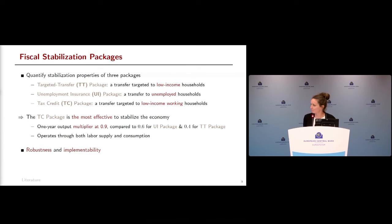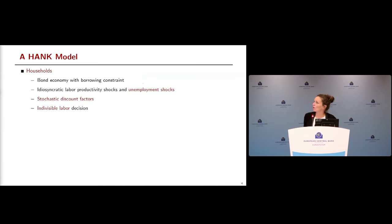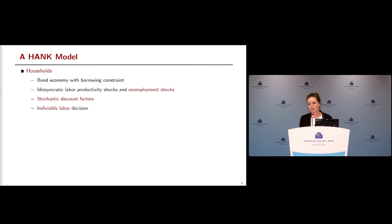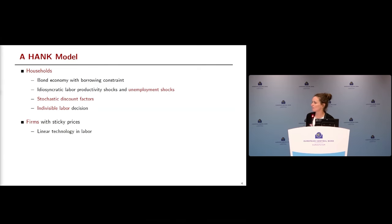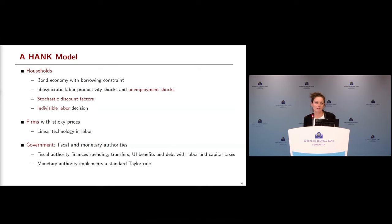The model is a relatively standard HANK framework. A continuum of households save using a risk-free bond up to a borrowing constraint. Households face idiosyncratic labor productivity shocks and unemployment shocks — unemployment is fully exogenous. There are also stochastic discount factors and an individual labor decision. Firms face sticky prices with a linear technology in labor and no capital. The government has a fiscal authority financing spending, transfers, unemployment benefits, and debt service with labor and capital taxes, plus a monetary authority implementing a standard Taylor rule.